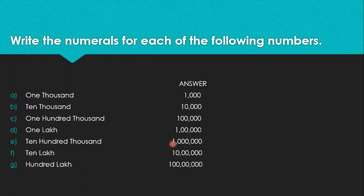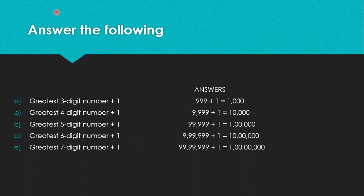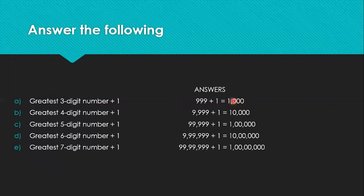In the Indian system, ten lakh is called ten lakh, and in the international system it is called ten hundred thousand. Hundred lakh: ones, tens, hundreds, thousands, ten thousands, lakhs, ten lakhs, hundred lakhs. Now the next question: greatest three-digit number plus one. The greatest three-digit number is 999. Adding one gives 1,000, which is the smallest four-digit number.